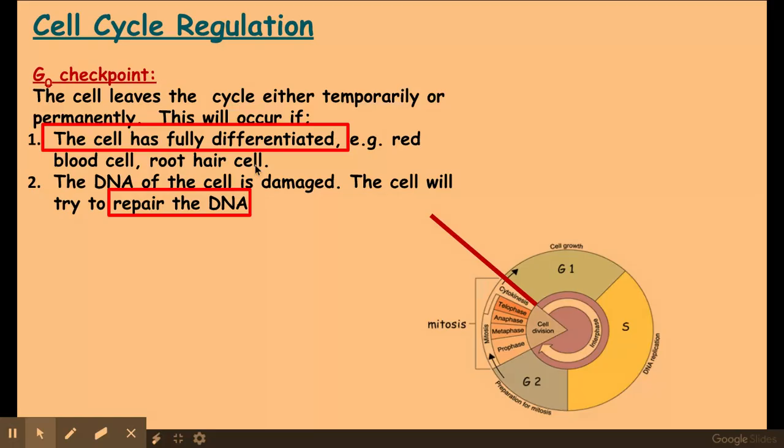it might be a muscle cell or a cardiac muscle cell. So any of these, they've entered G0 because the cell has become fully differentiated. And you'll learn more about differentiation in stem cells towards the end of this topic if you did want to have a look at that and remind yourself.